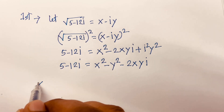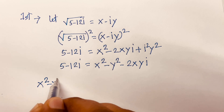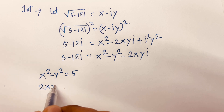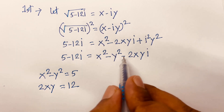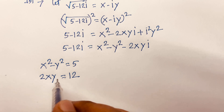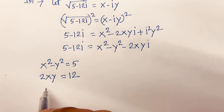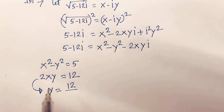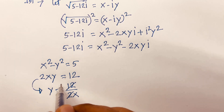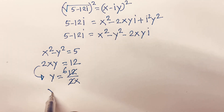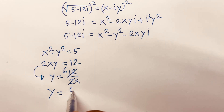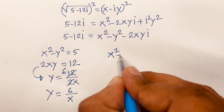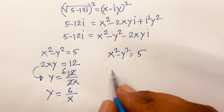Comparing the real part and imaginary part, I can say: x squared minus y squared equals 5, and 2xy equals 12. The minus signs cancel, so y equals 12 divided by 2x, which gives y equals 6 over x.